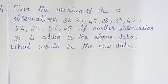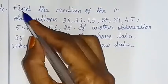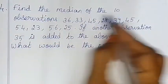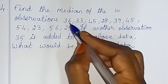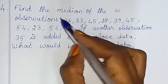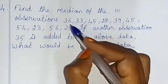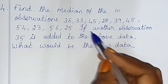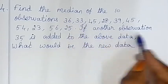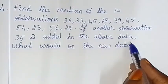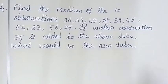Now we will find the median of 10 observations. If another observation, 35, is added to the above data, what would be the new median?